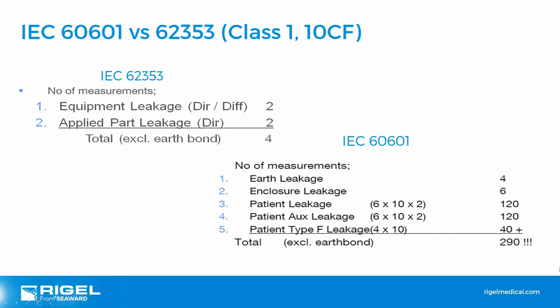NFPA 99, although it doesn't have the same tests, follows a similar principle to 62353 in that tests are condensed with combined applied parts for leakage, resulting in a similar time-saving process.